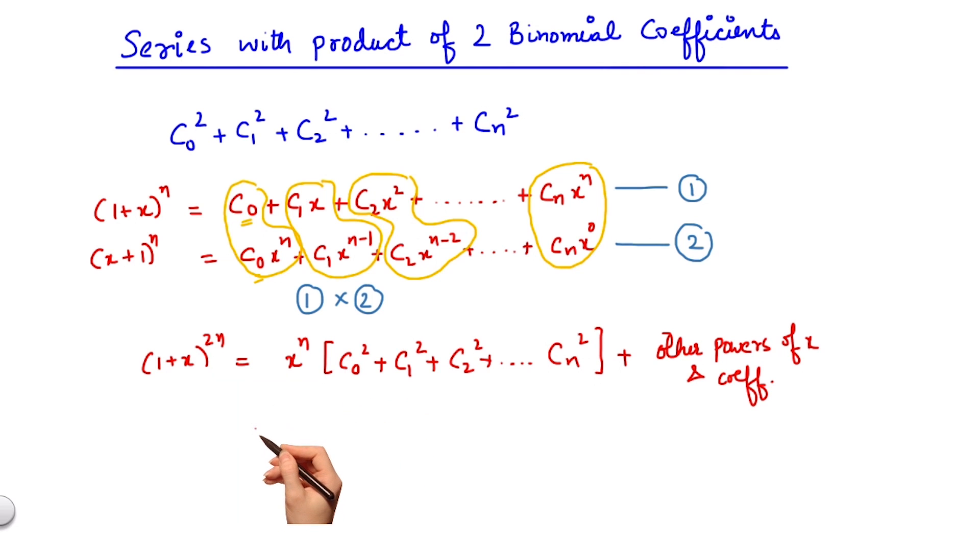Now let's apply a simple trick and compare the coefficient of x to the power n on both left hand side and right hand side. If I expand 1 plus x to the power 2n, the coefficient of x to the power n is 2n cn.